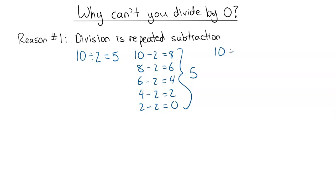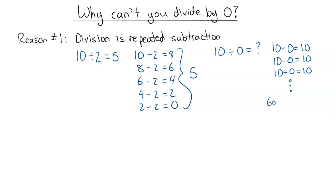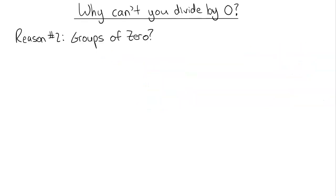Now think about the same with 10 divided by 0. We go 10 minus 0, which is still 10. Subtract 0 again — it's still 10. You do that over and over and you're never getting a number smaller than 10; that is going to go on forever and never end. In the old calculator days, a calculator would catch smoke if you divided by 0 because it would not be able to stop doing the calculation.